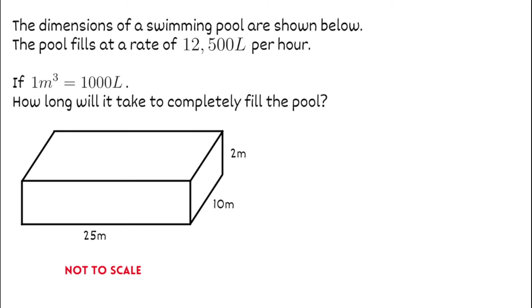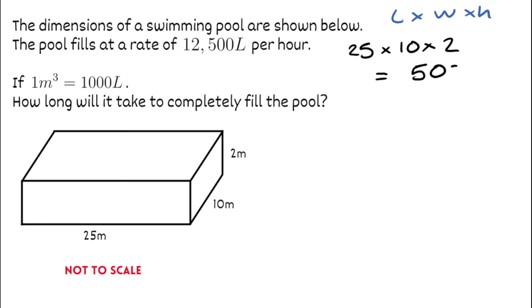For our last question, we've got a problem-solving question. The dimensions of a swimming pool are shown — the pool fills at a rate of 12,500 litres per hour. One metre cubed is equivalent to 1,000 litres. How long will it take to completely fill the pool? We can see we're given metre cubed units, so this involves volume. Using our formula — volume of a cuboid is length times width times height — we have 25 multiplied by 10 multiplied by 2, which gives us 500. The volume of the pool is 500 metres cubed.